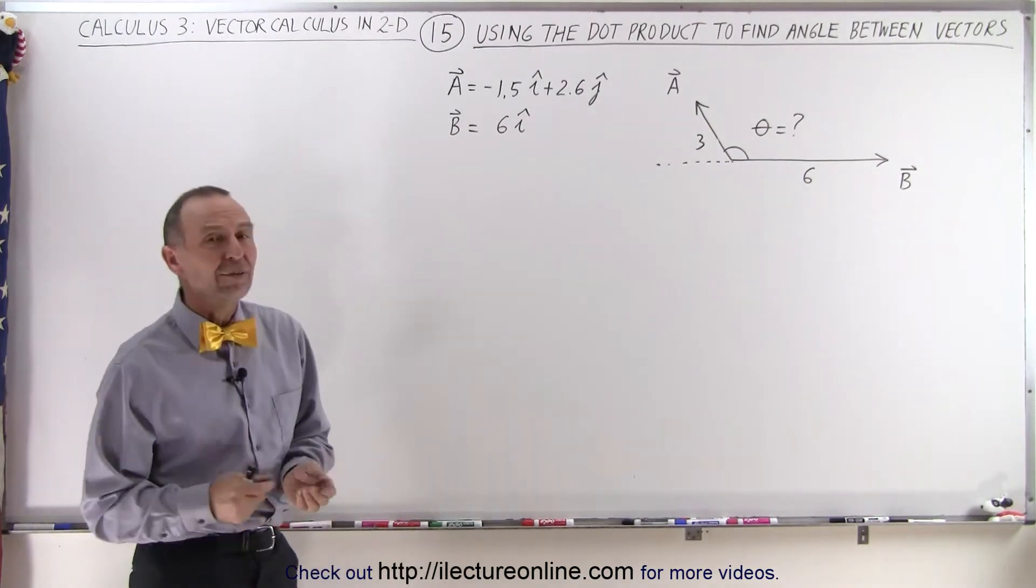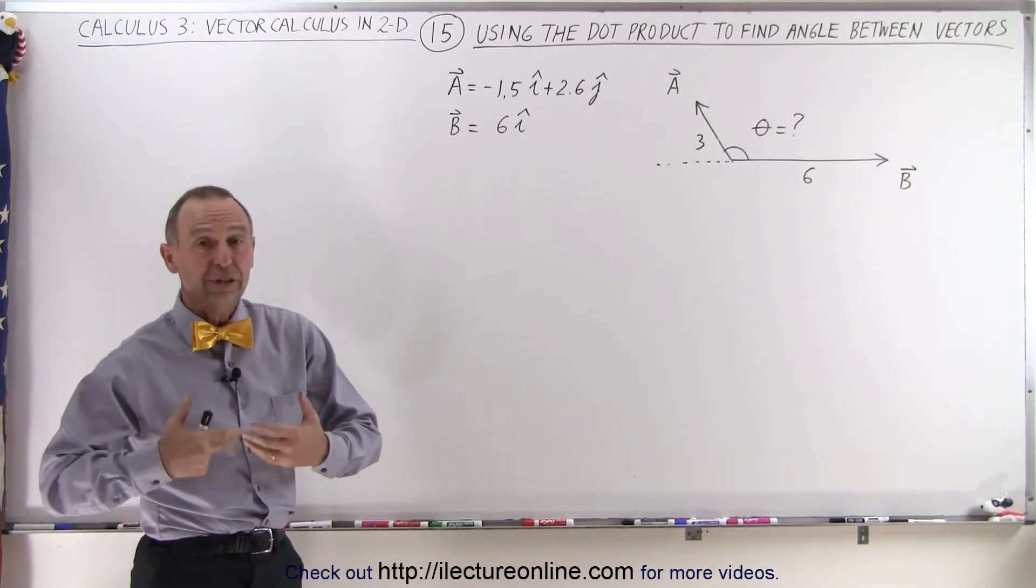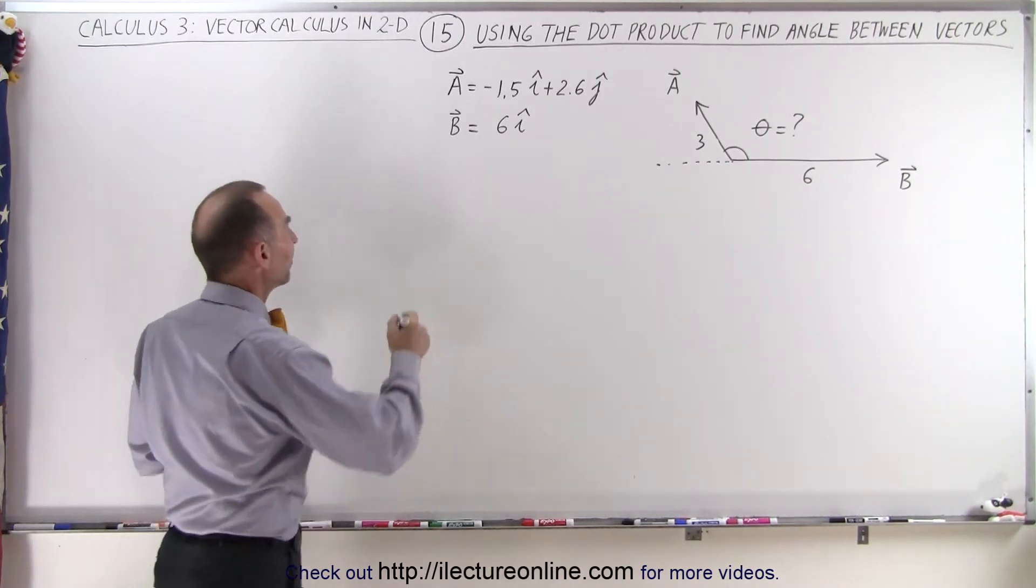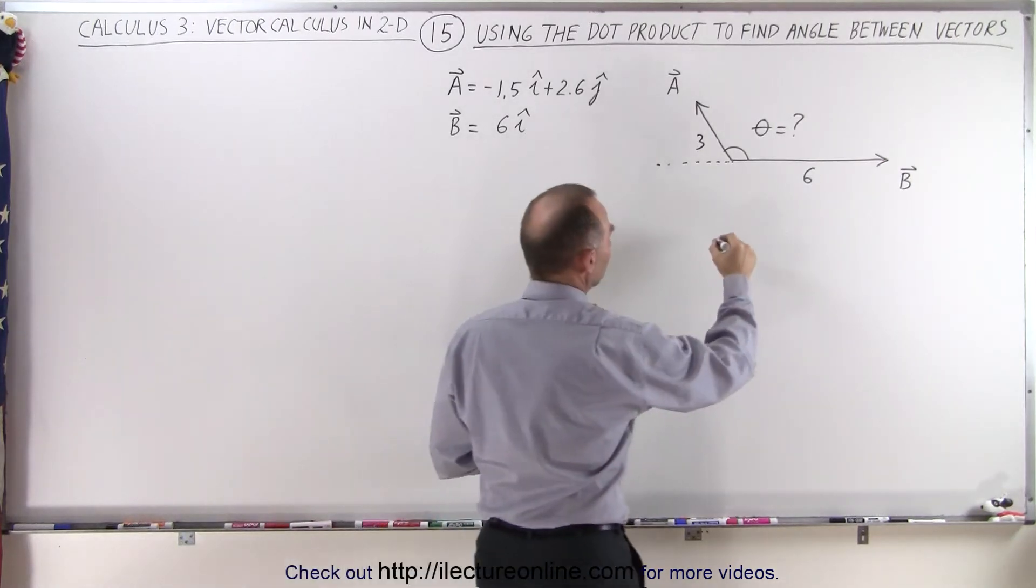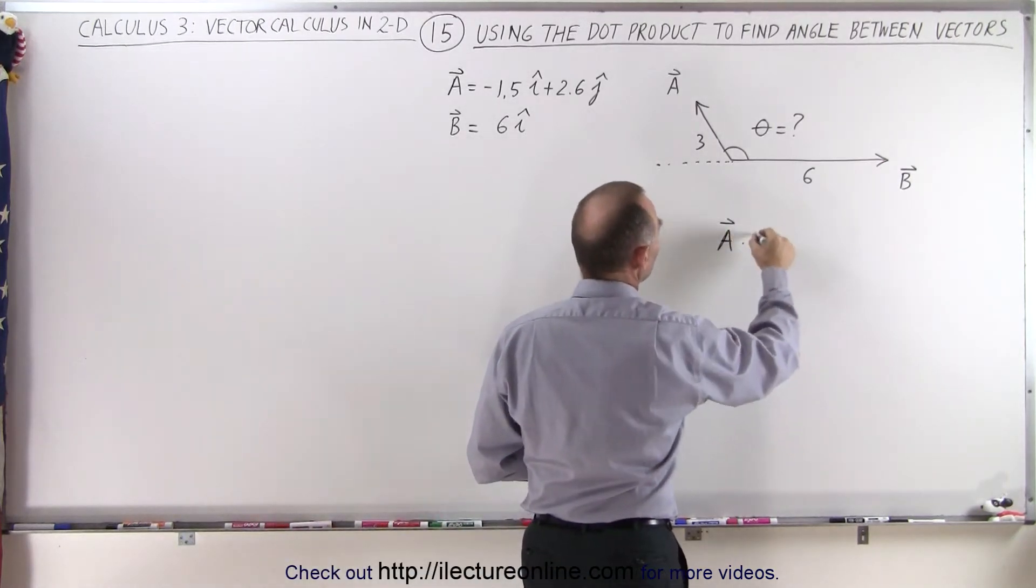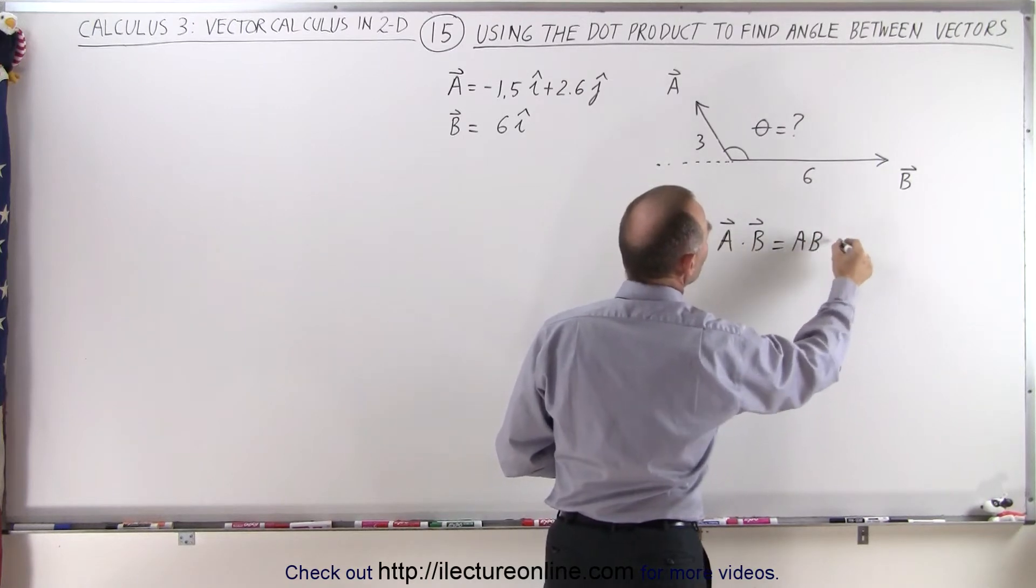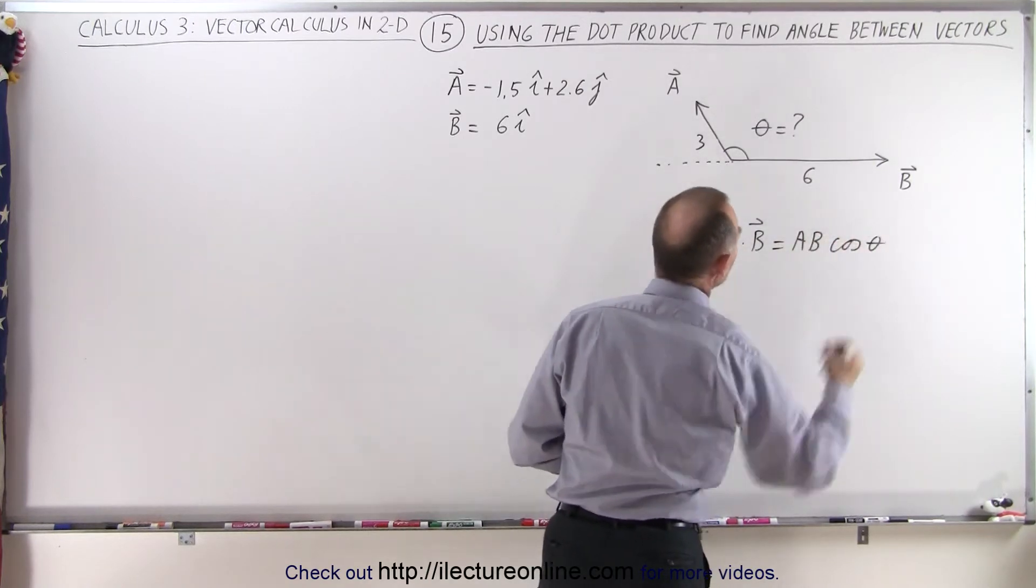The reason for that is because there's two different ways or two different methods by which you can do the dot product. So let's take a look at that. We can say that the dot product, A dot B, let me write over here. So we have A dot B is equal to the magnitude of A times the magnitude of B times the cosine of the angle between them.